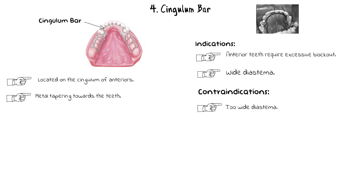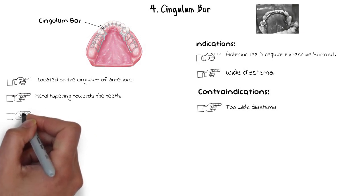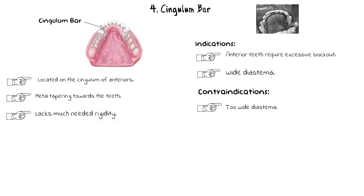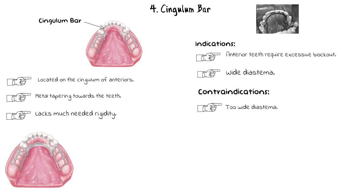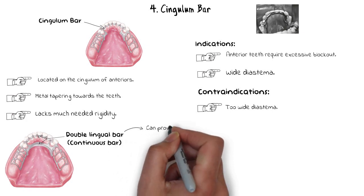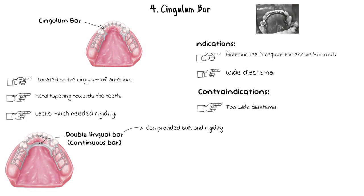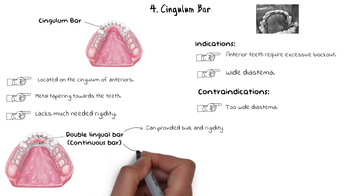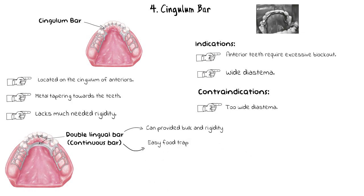Since the cingulum bar lacks the thick supporting metal of a lingual bar, it lacks adequate bulk and strength. It can therefore be used alone or combined with a lingual bar — sometimes called a double lingual bar or continuous bar — where the lingual bar provides the needed rigidity. However, this combination can trap food between the two metal straps and may be more objectionable to the patient's tongue than a single lingual plate or bar.